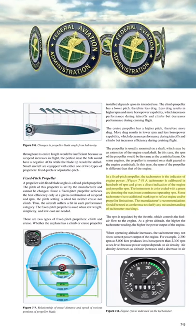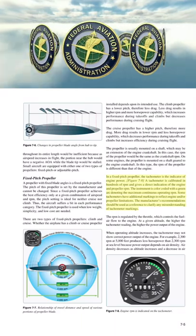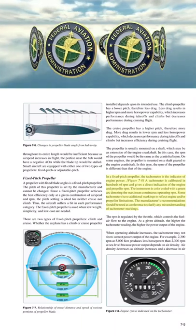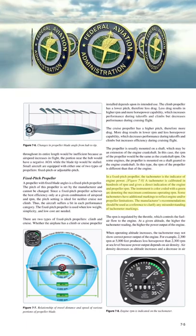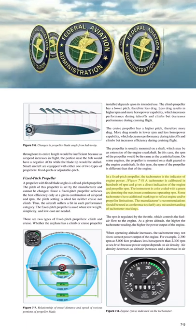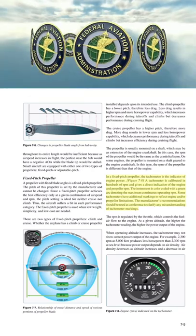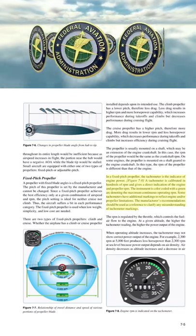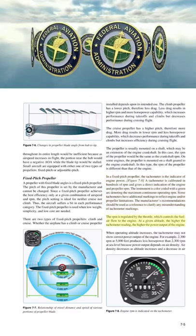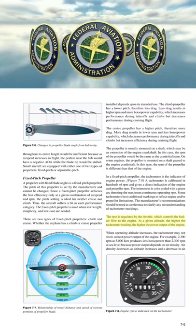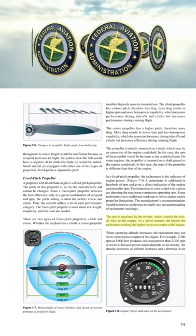In a fixed pitch propeller, the tachometer is the indicator of engine power. A tachometer is calibrated in hundreds of RPM and gives a direct indication of engine and propeller RPM. The instrument is color-coded with a green arc denoting the maximum continuous operating RPM. Some tachometers have additional markings to reflect engine or propeller limitations. The RPM is regulated by the throttle, which controls the fuel-air flow to the engine. At a given altitude, the higher the tachometer reading, the higher the power output of the engine.